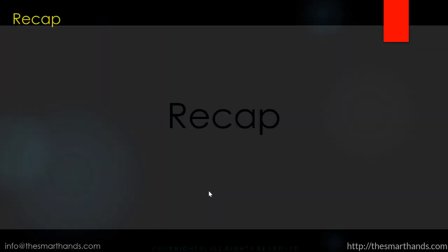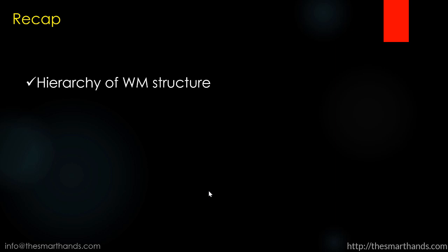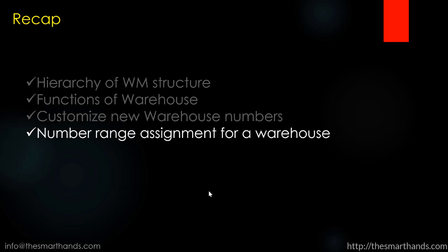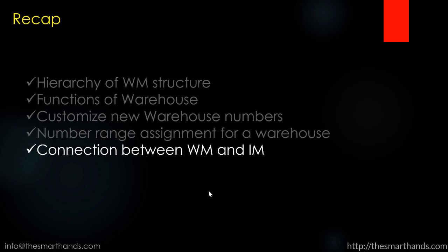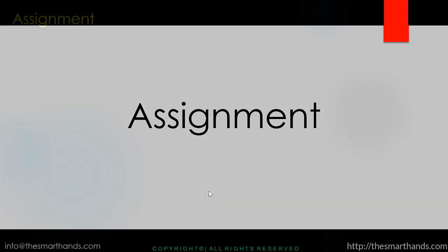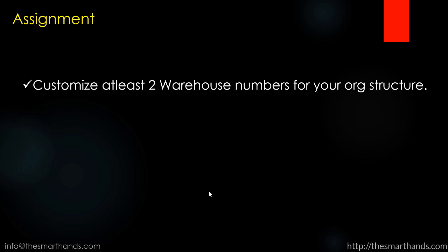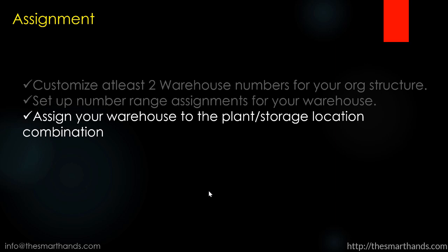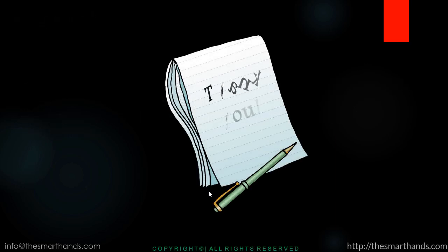That's all about this video. To recap, we learned about the hierarchy of the WM structure, the functions of the warehouse, how to customize a new warehouse number and change its settings, number range assignment, and how to connect warehouse management to inventory management. For your assignment: customize at least two warehouse numbers, set up number range assignments, configure the other settings shown in the video, and finally assign your warehouse number to the plant and storage location combination created in the previous exercise.